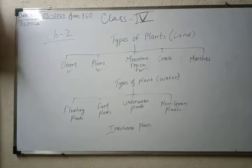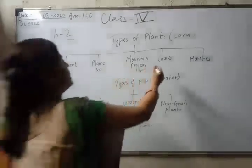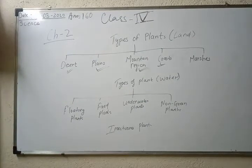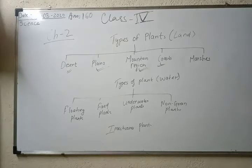Now we come to the next topic: marshes. The soil in the marsh area is clay and sticky. Clay and sticky means like a blackish, muddy soil is found in this area — sticky means a muddy texture. The air spaces in the soil are very less, and the soil is always waterlogged.